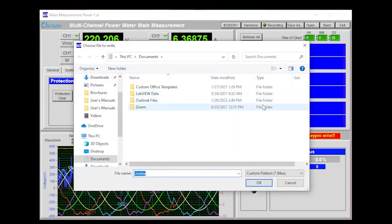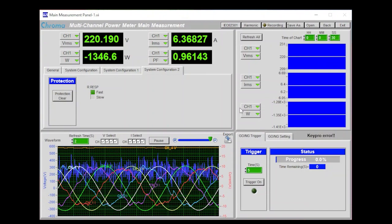In the Save As panel, you can save the settings so that in the future, you can simply recall the settings instead of having to reset everything. This is good for when you are testing different DUTs with varying requirements.